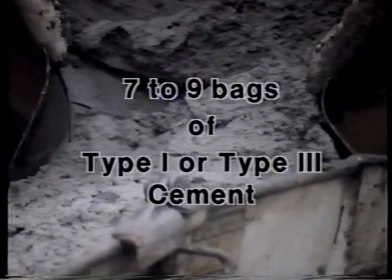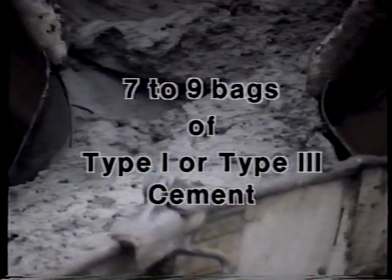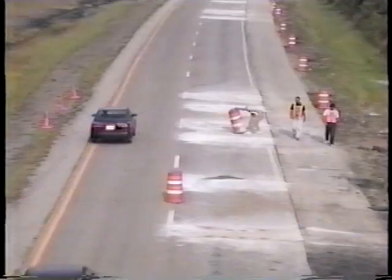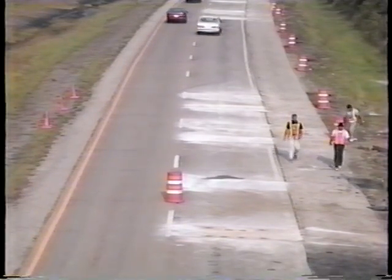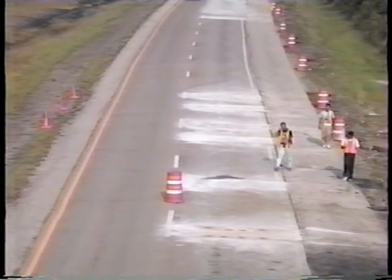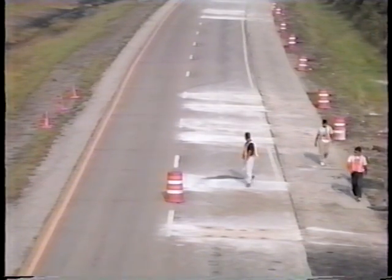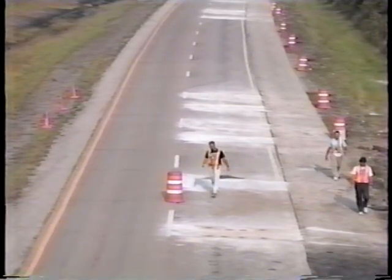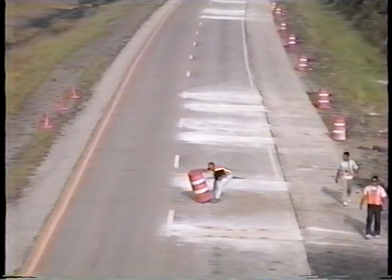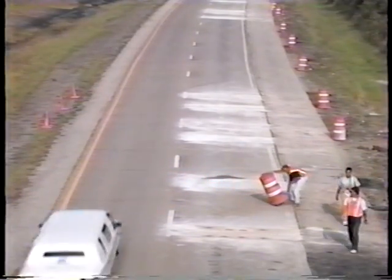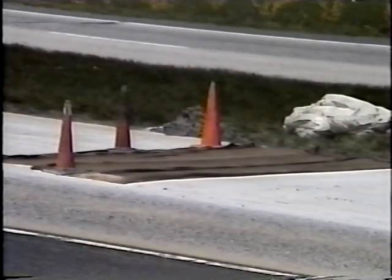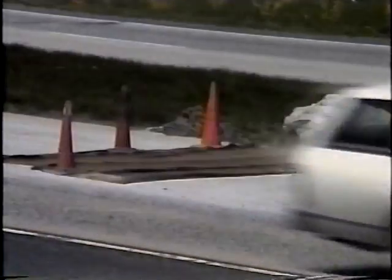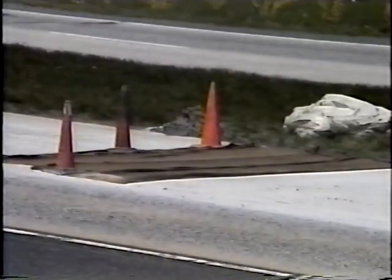Typical fast-track mixes contain seven to nine bags of Type I or Type III cement per cubic yard of mix. Depending on cement type, cement content, the use of an accelerator, and curing conditions, these mixes allow opening of the repair in four to 24 hours. The selection of the concrete mixture should be based on available lane closure time. Sometimes it may be acceptable to let the concrete cure for several days, which allows a regular concrete mixture to be used.